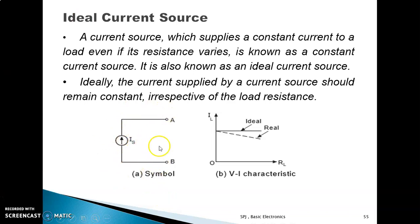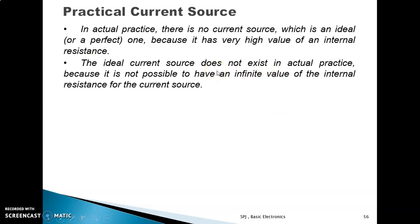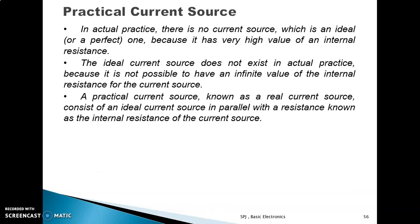This is the VI characteristic of the ideal current source, and this is for the real current source. In actual practice, there is no ideal current source because it is not possible to have an infinite value of internal resistance. The ideal current source does not exist in actual practice. A practical current source — also called a real current source — consists of an ideal current source in parallel with a resistance known as the internal resistance of the current source.